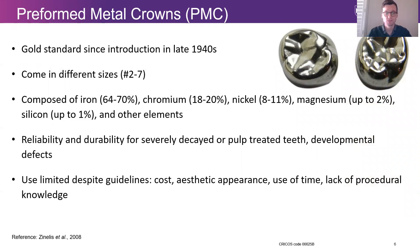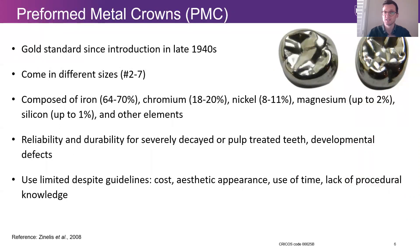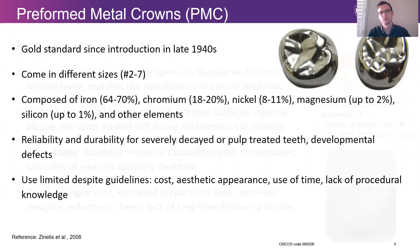The preformed metal crowns have been the gold standard since their introduction in the late 1940s, and they come in a variety of different sizes. They're composed largely of iron, chromium, nickel, magnesium, silicon, and other elements. They're used for their reliability and durability for severely decayed or pulp-treated teeth, as well as teeth that have developmental defects. Despite there being clear guidelines as to their use, the vast majority of general practitioners don't use these crowns due to cost, aesthetic appearance, use of time, or lack of procedural knowledge. It should be noted, however, that pediatric dentists use these crowns routinely.